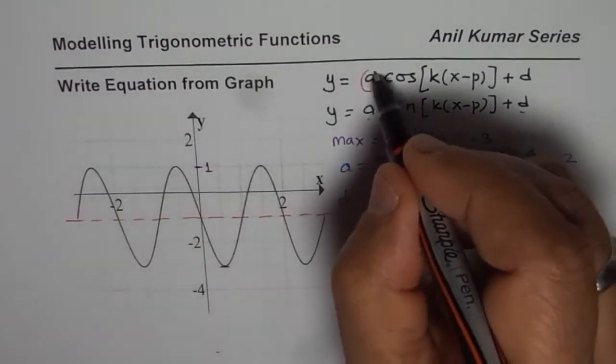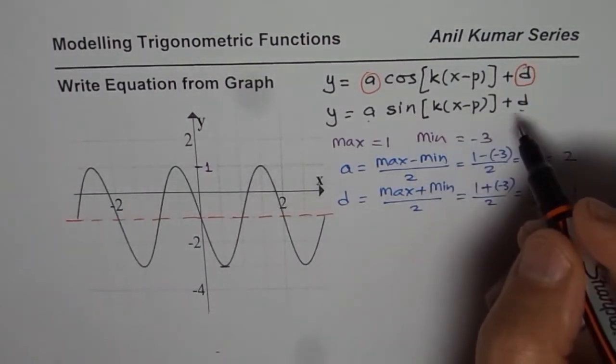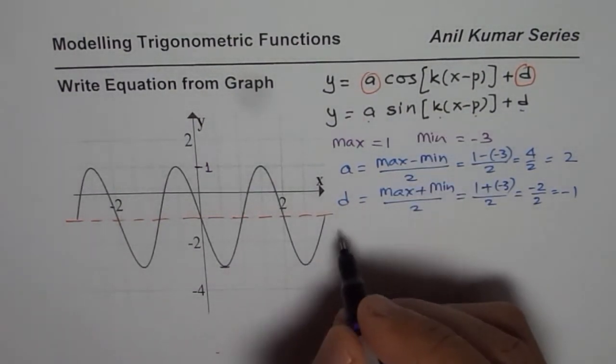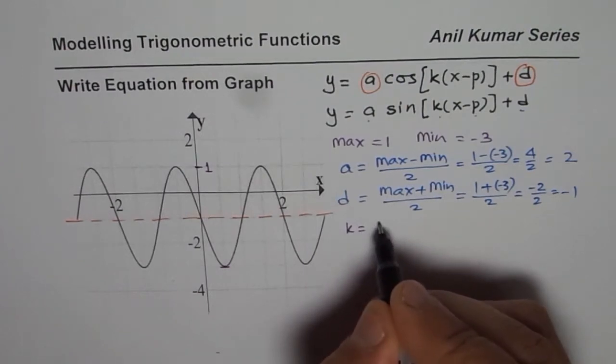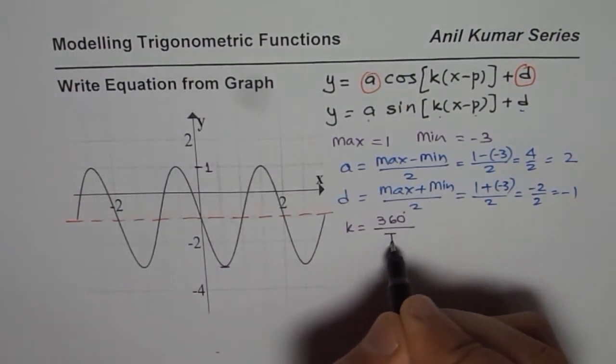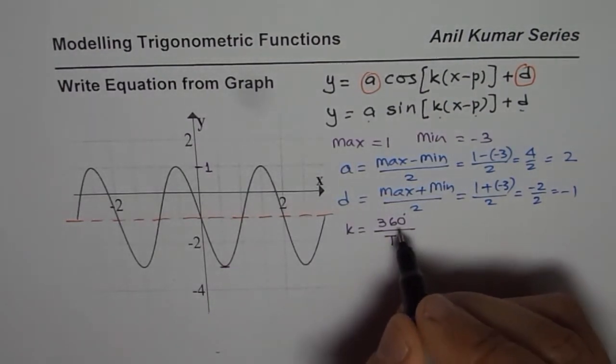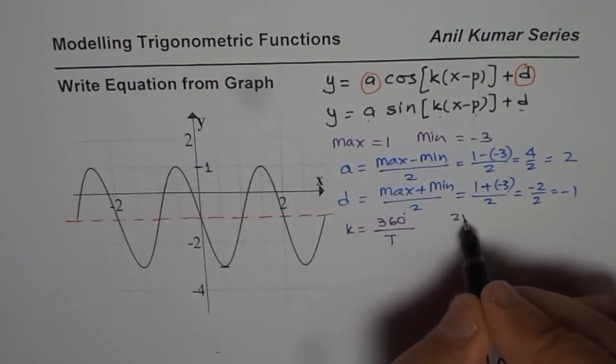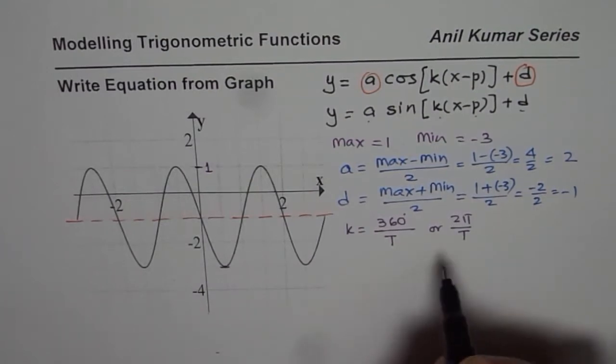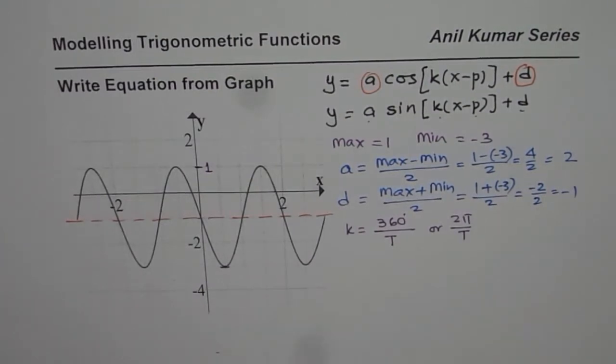So now we have got a and we have got d. Let us see how to find k and p. To find the value of k we need to find the time period. k equals 360 degrees if you are working in degrees divided by the time period. If you are working in radians it could be written as 2π by the time period. But the question here is how do you find the time period?